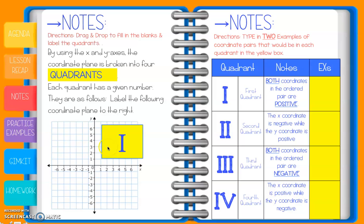So this is quadrant one, quadrant two, quadrant three, and then quadrant four.